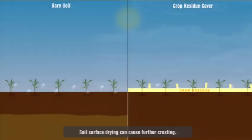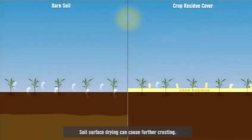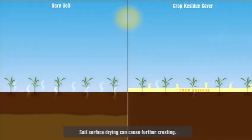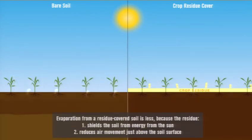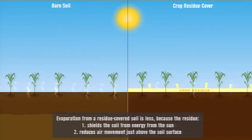As the sealed bare soil surface dries out, it forms a crust, which is much more compact, hard, and brittle than the soil beneath it.